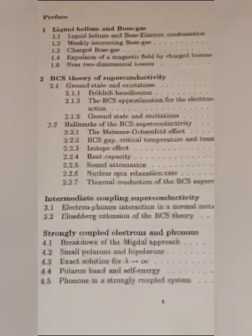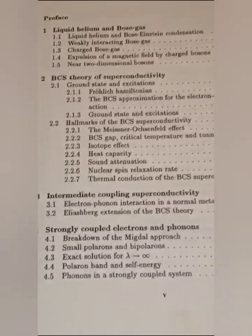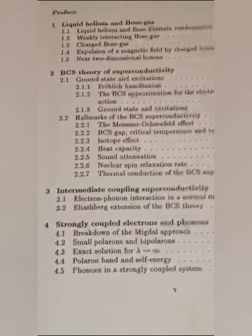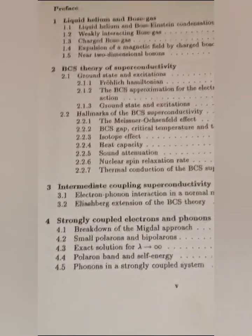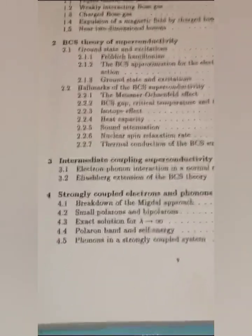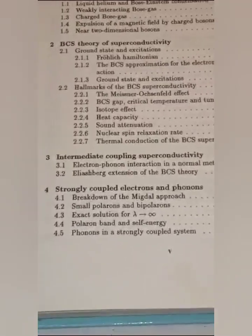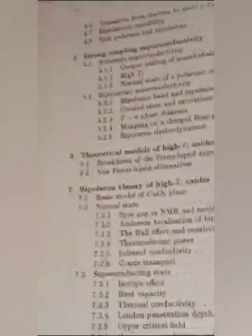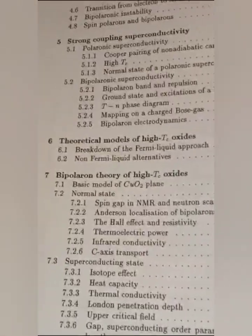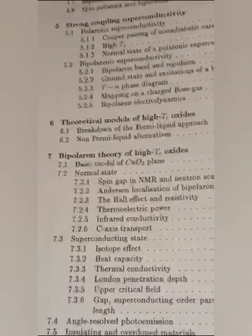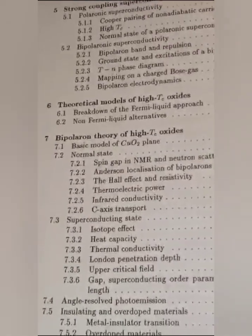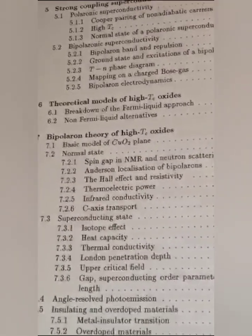The first chapter is liquid helium and Bose gas. The second chapter is Bardeen-Cooper-Schrieffer theory of superconductivity. Three chapters: intermediate coupling superconductivity. Four chapters: strongly coupled electrons and phonons. Five chapters: super coupling superconductivity. Theoretical models of high temperature oxides. Bipolaron theory of high temperature critical temperature oxides.